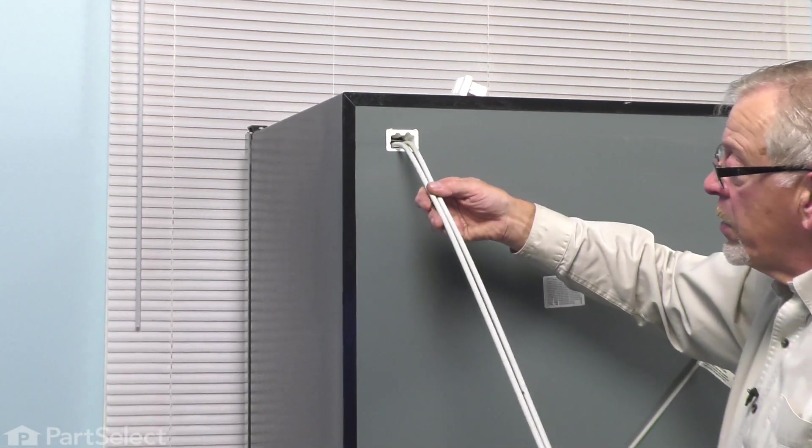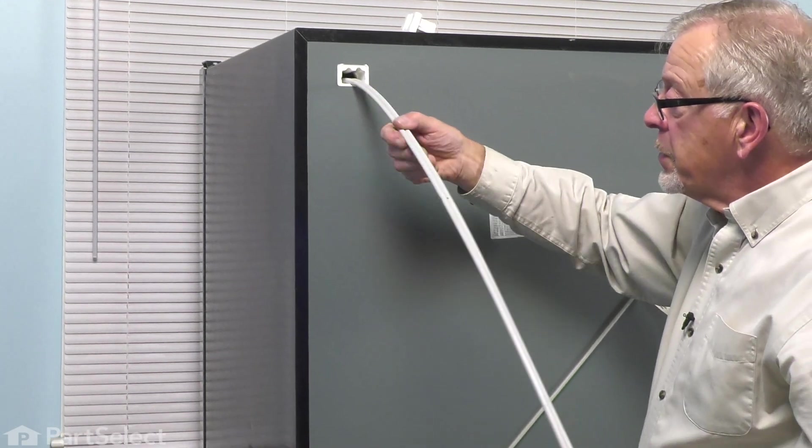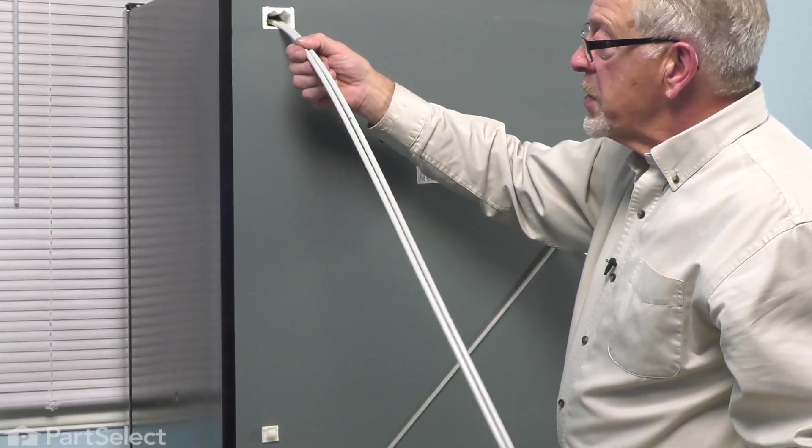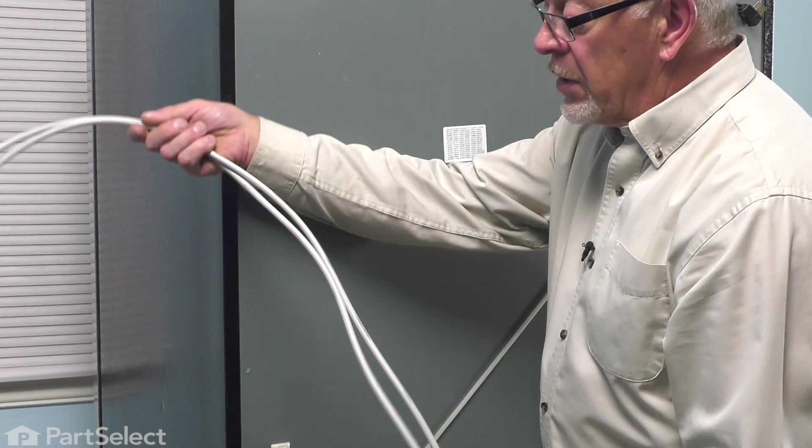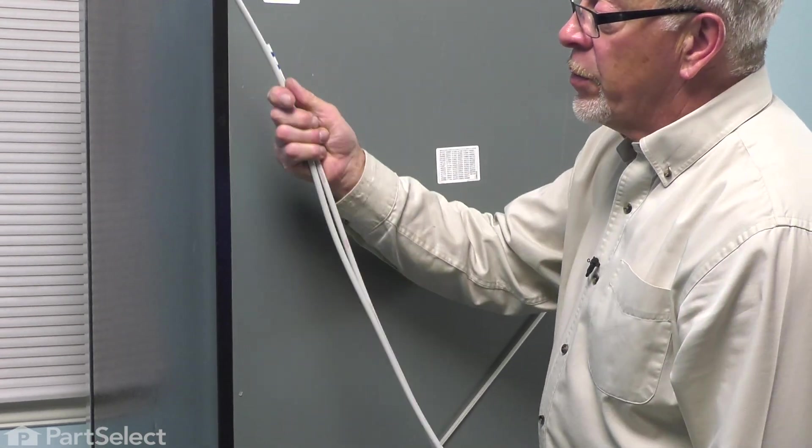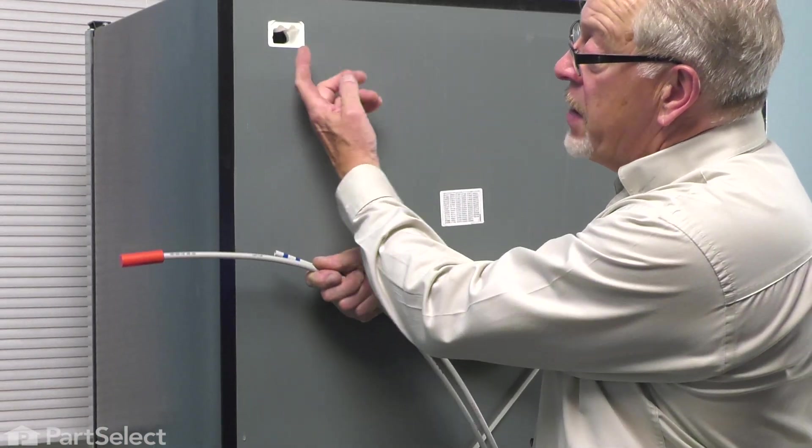We can now feed both of those water lines through to the front and remove it from inside. Now, with the tubing completely unfurled, we're next going to feed that from the inside out.